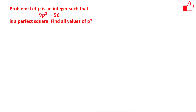Hello friends. This problem is related to the concept of perfect squares. It says: let p be an integer such that 9p² - 56 is a perfect square. You have to find all possible values of p. Whenever you have a perfect square kind of problem, you can try factorization. So in this problem I will use the concept of factorization to solve it.